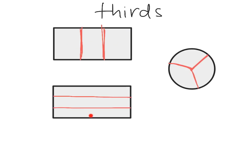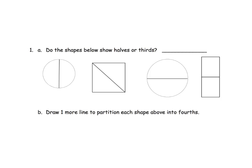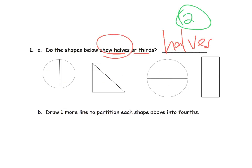Whereas in a rectangle you've got the vertical cuts and then you've got the horizontal cuts. So do the shapes below show halves or thirds? We're talking halves because we always have two pieces every single time. Whenever you're talking about halves, you're talking about two pieces.